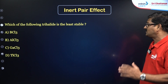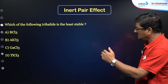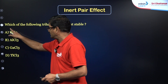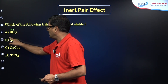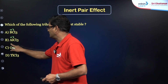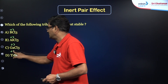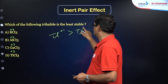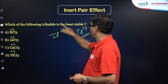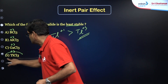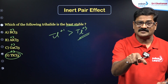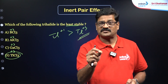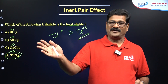Another question: 'Which of the following trihalides is the least stable?' — BCl₃, AlCl₃, GaCl₃, or TlCl₃. Checking the oxidation states: boron, aluminium, gallium, and thallium all show +3 in these compounds. However, for thallium the +1 oxidation state is more stable, so the +3 oxidation state is the least stable for thallium. Therefore, TlCl₃ is the least stable trihalide. You can crack inorganic chemistry questions using the inert pair effect this way.